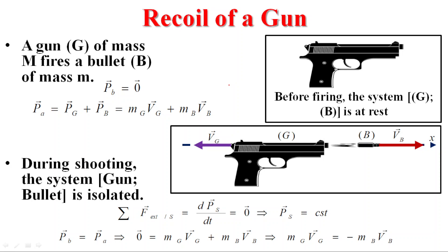Recoil of a gun is similar to an explosion. A gun G of mass M fires a bullet of mass m. Before firing the bullet, the gun is supposed to be at rest. Therefore, P before firing is zero. After the explosion, the bullet moves with a velocity VB and the gun will recoil with a velocity VG.